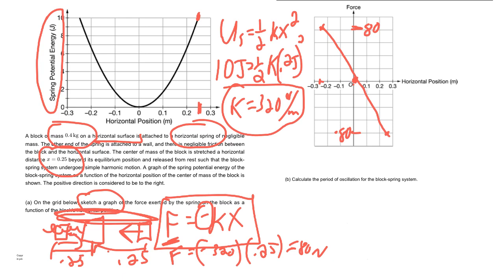All right, the next part is going to say let's figure out the period of oscillation. So remember, T equals 2 pi square root of M over K. So yeah, we know the mass. The mass was given to us.